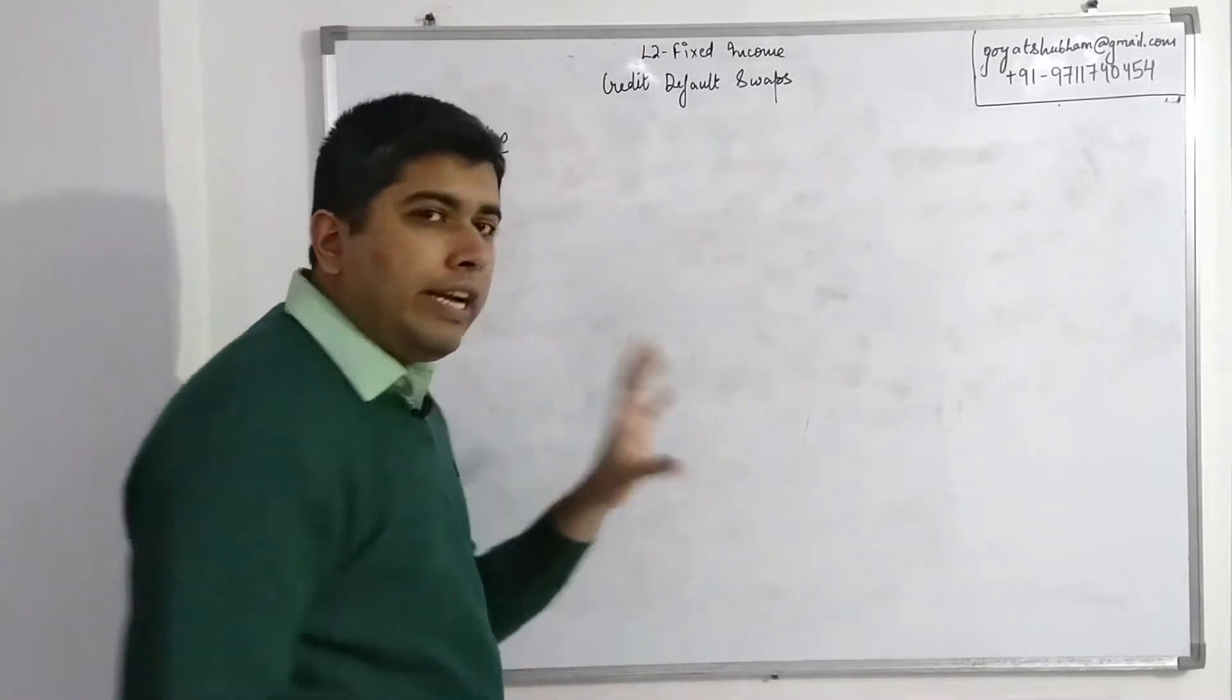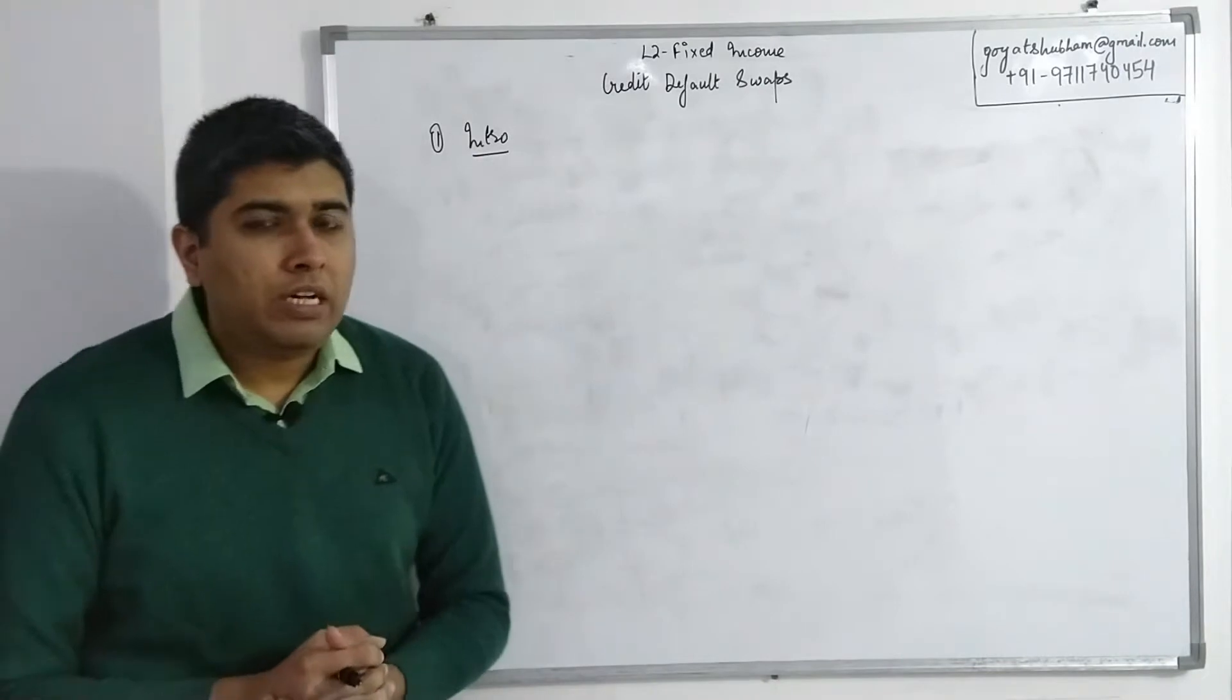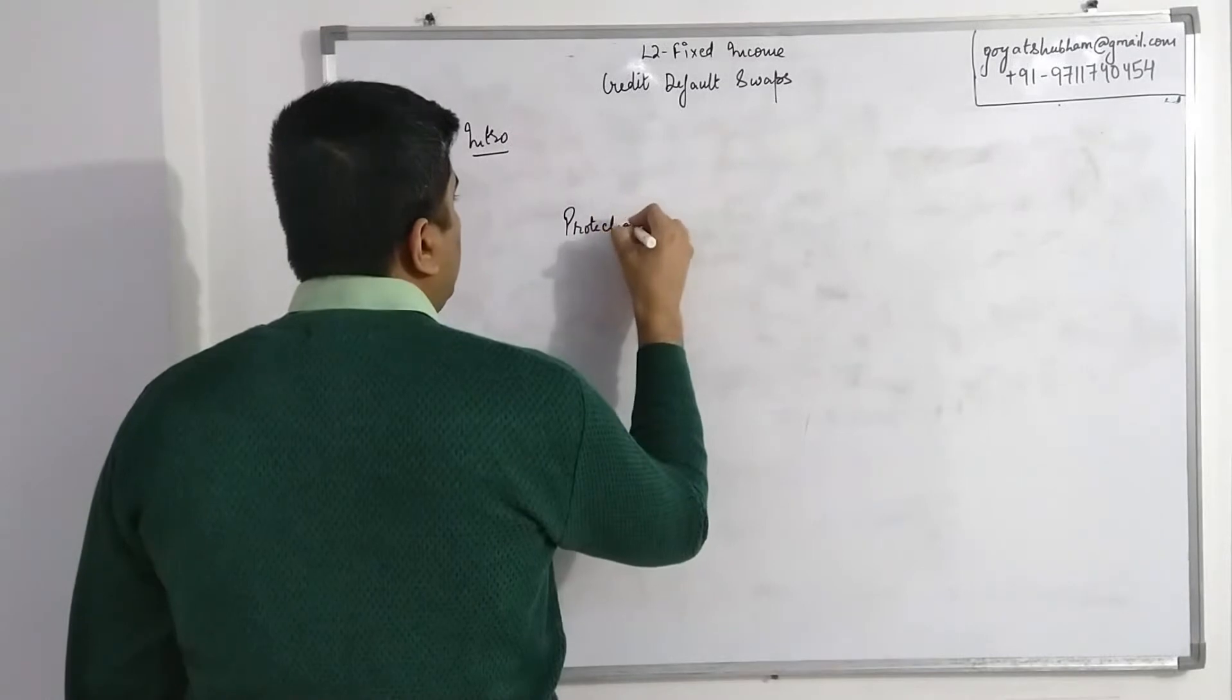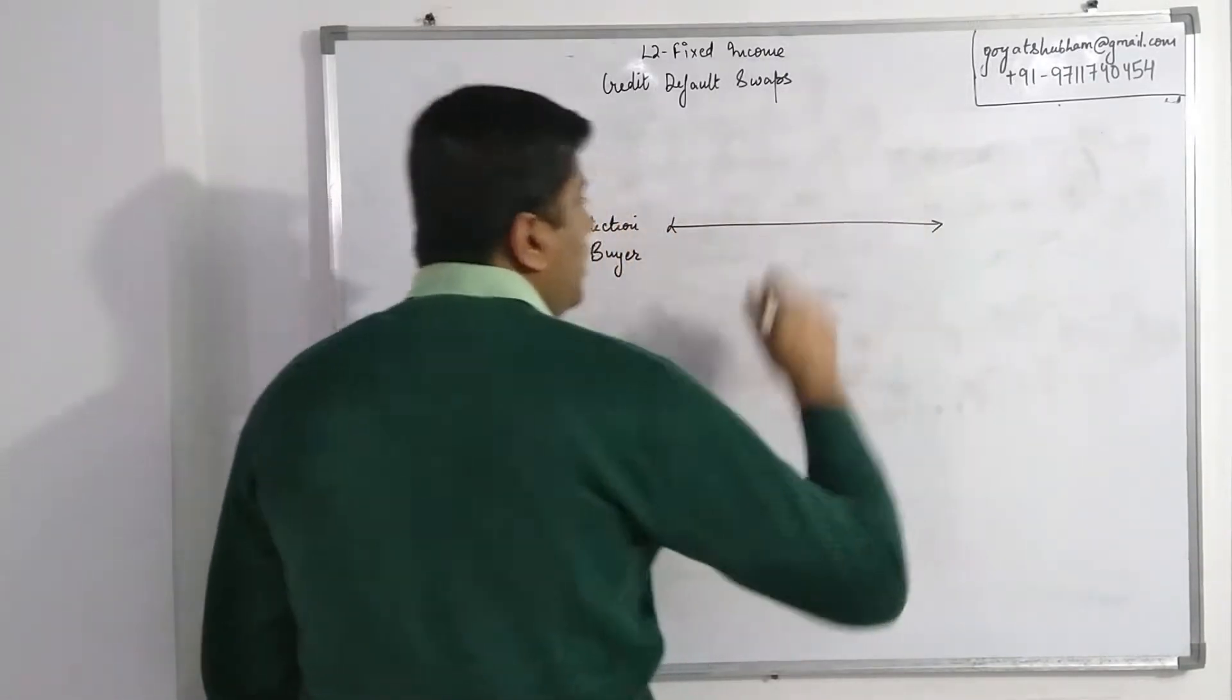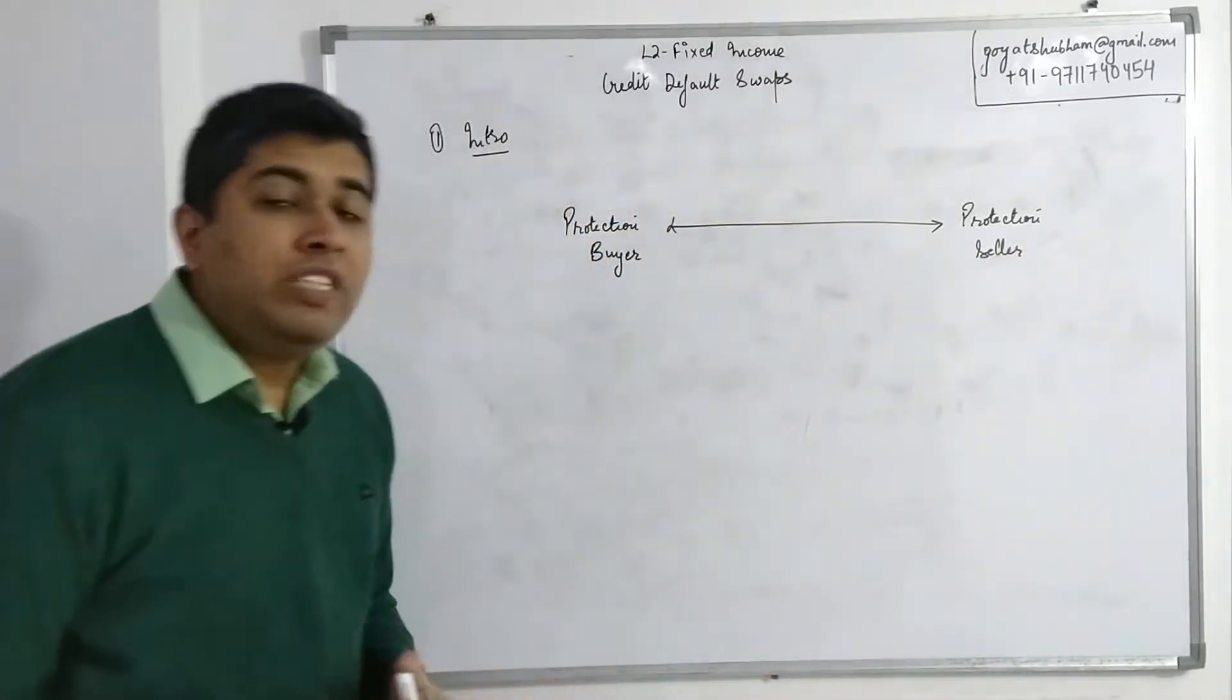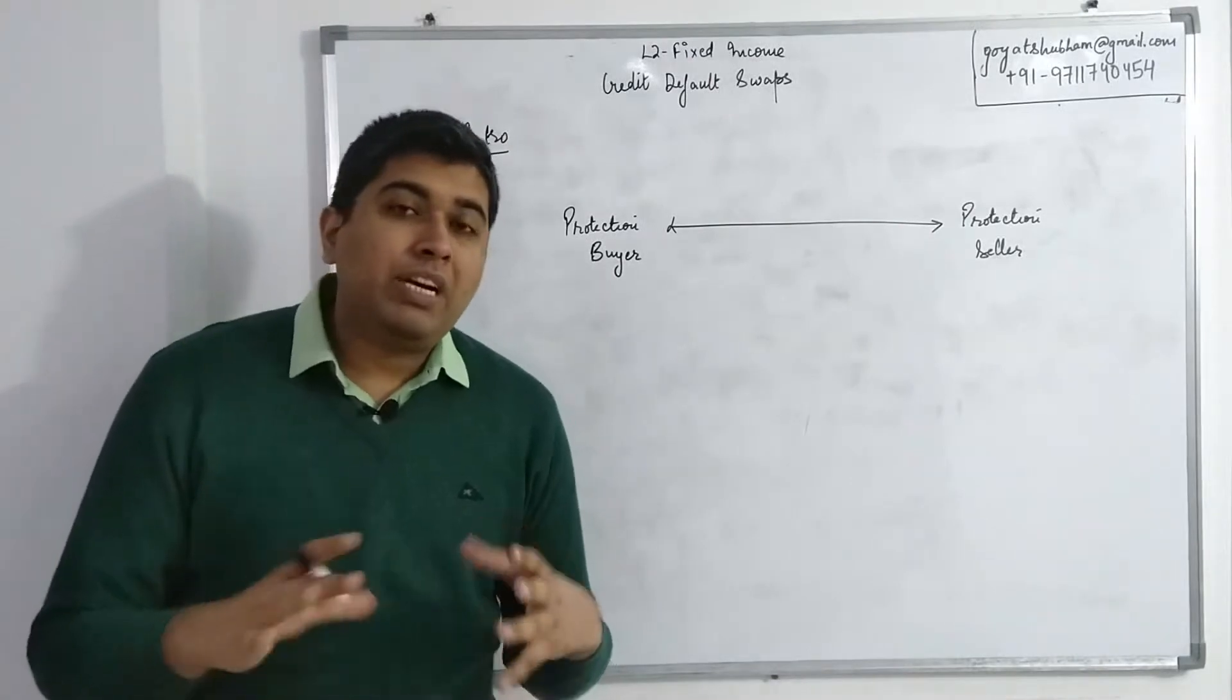Credit default swaps, despite the name having swaps in it, it's not actually a derivative instrument like traditional interest rate swaps or currency rate swaps. Rather, CDS works very similar to how an insurance contract works. You have various parties involved: a protection buyer who is buying the CDS, and the other party is the protection seller who is selling the CDS. The buyer is the person who is exposed to some credit risk but wants to remove his exposure to that credit.